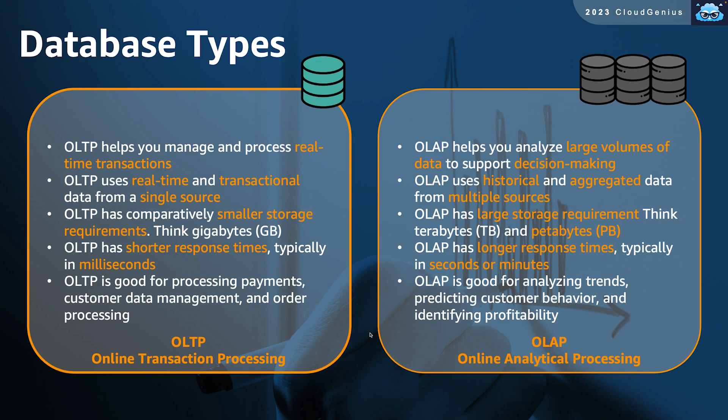On the other hand, online analytical processing databases are another type of database that deal with large and huge data volumes. Those are usually associated with decision-making applications — applications that analyze a huge set of data, including historical and aggregated data acquired from multiple sources. These database sizes are in the range of petabytes of data, and we expect a longer response time. When we run a query against such databases, it might execute within a couple of seconds, or even in some cases, some minutes.